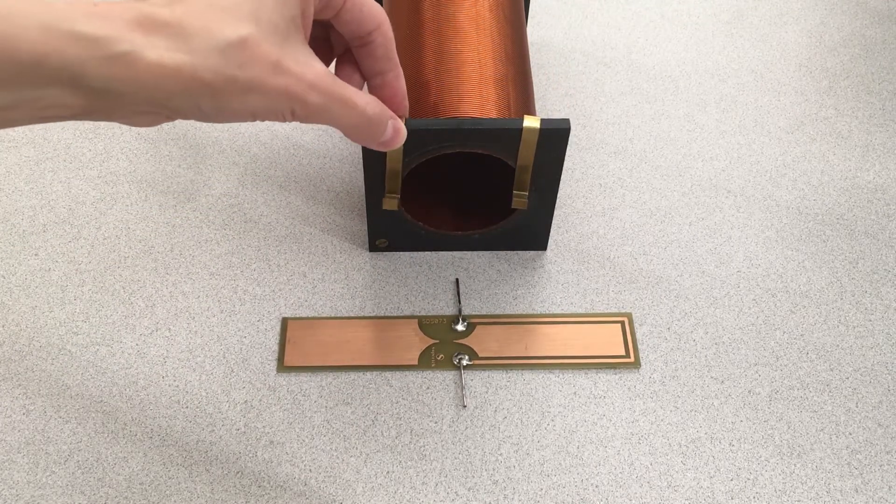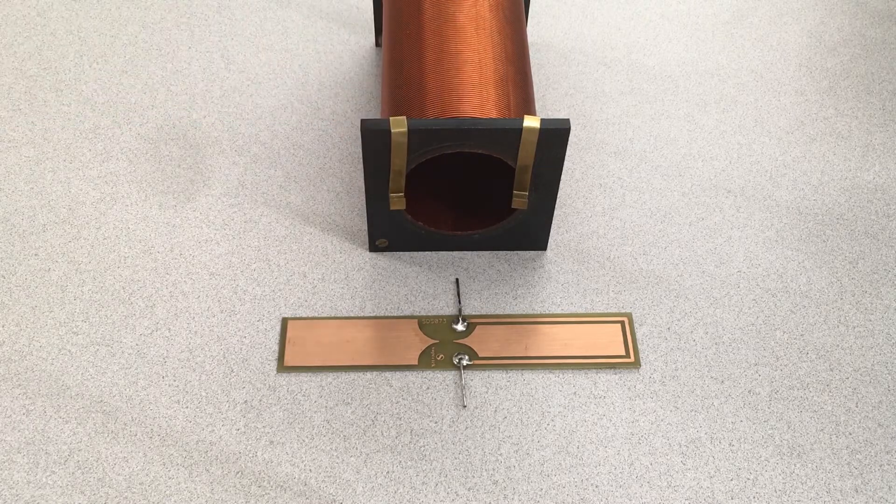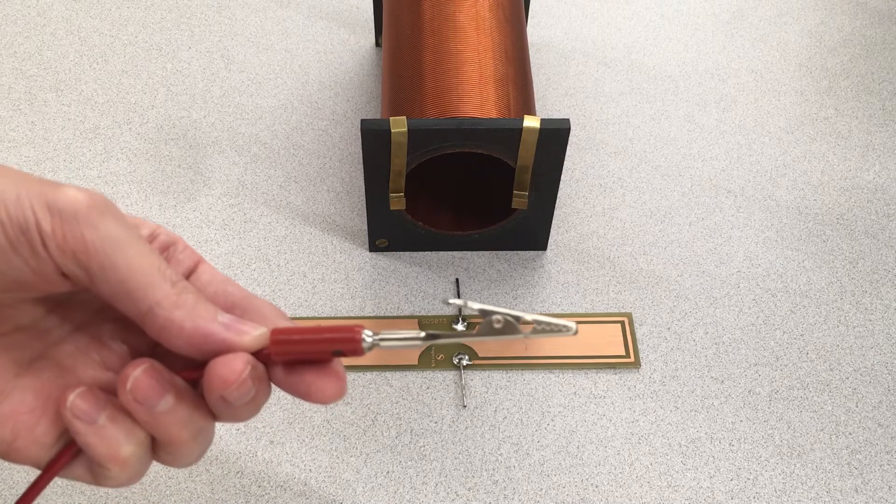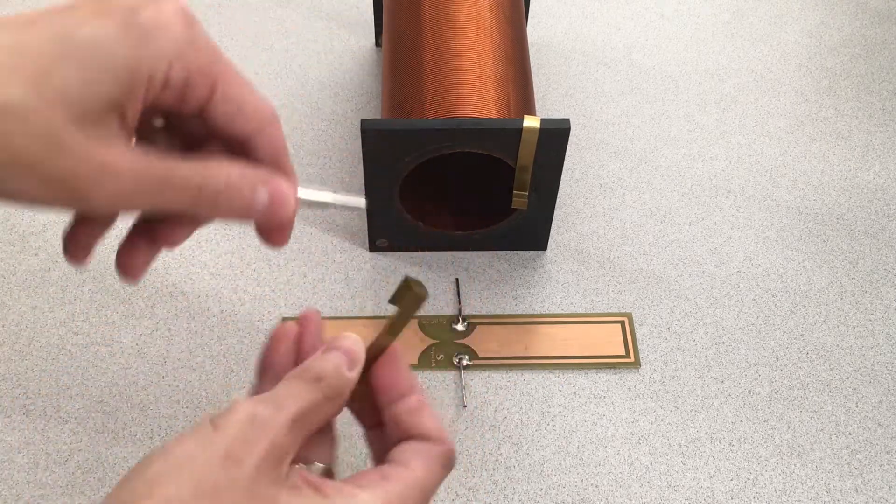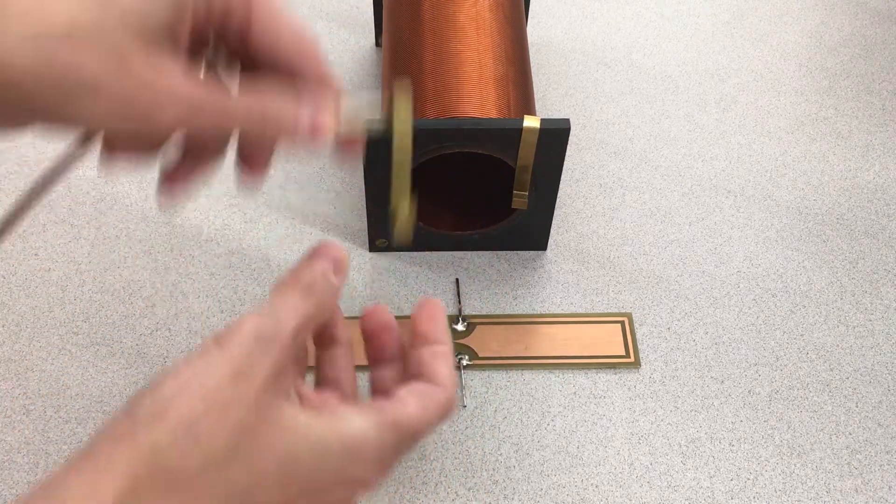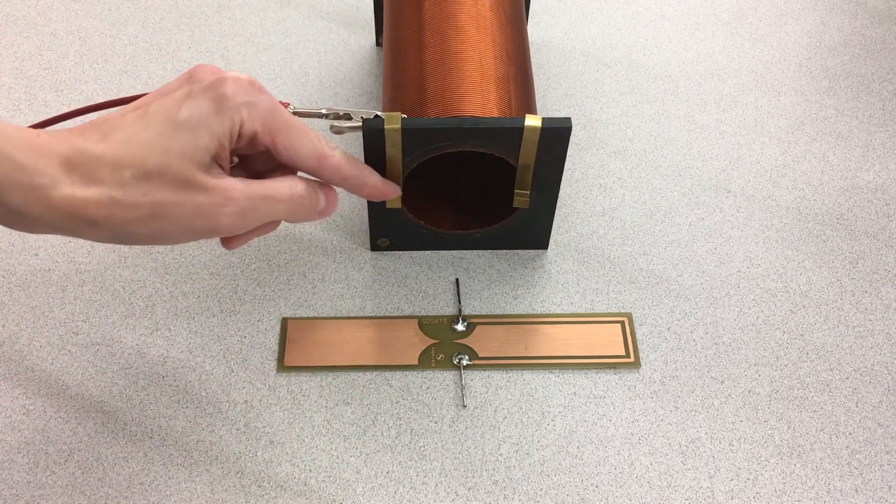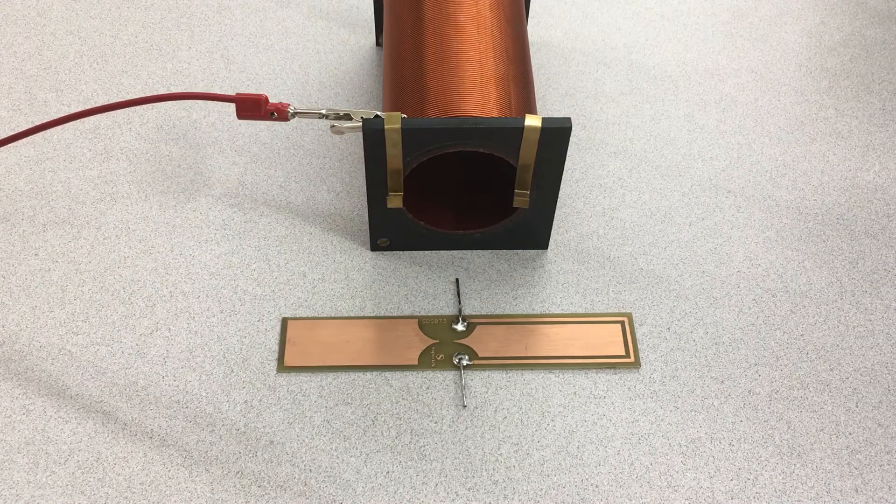The pivot points should rest firmly against the solenoid, but they do not. One way to correct for this is to use the alligator clips that will supply power to the current balance. Simply clip them on the back of the pivot points, then press them down on the solenoid. The pivot points now rest firmly against the solenoid.